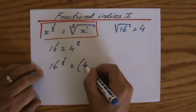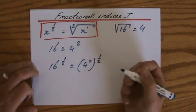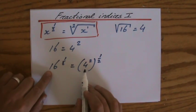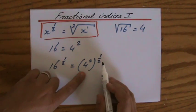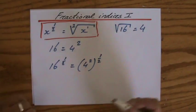is the same as 4 to the power of 2 to the power of a half. 16, which is 4 squared, so 16 to the power of a half is the same as 4 squared to the power of a half. We agree with that.